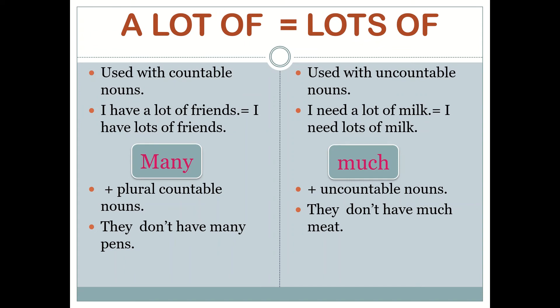We have 'a lot of,' which means 'lots of.' Used with countable nouns: 'I have a lot of friends,' which equals 'I have lots of friends.' Used with uncountable nouns: 'I need a lot of milk,' which equals 'I need lots of milk.'